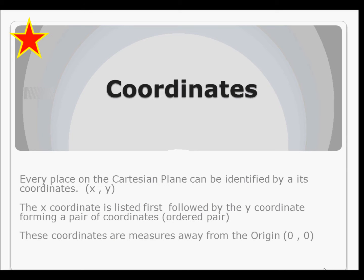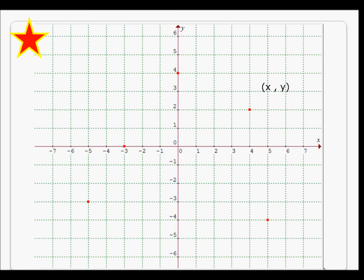However, sometimes we wish to have more detail. Therefore, we use coordinates. And every place on the Cartesian plane can be identified by using two coordinates, X and Y. The X coordinate is listed first, followed by the Y coordinate forming a pair of coordinates. And because they have to be listed in order, they are often referred to as an ordered pair. These coordinates are measures away from the origin. If you wish to remember which one comes first, X comes before Y in the alphabet.